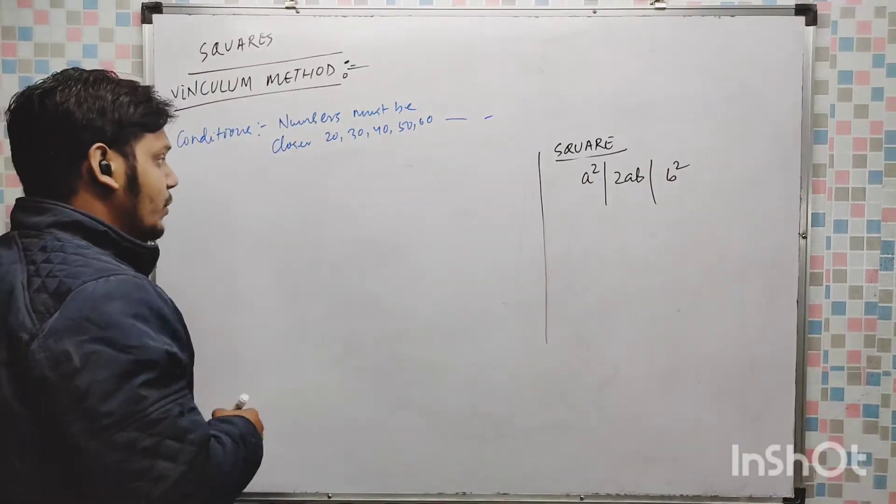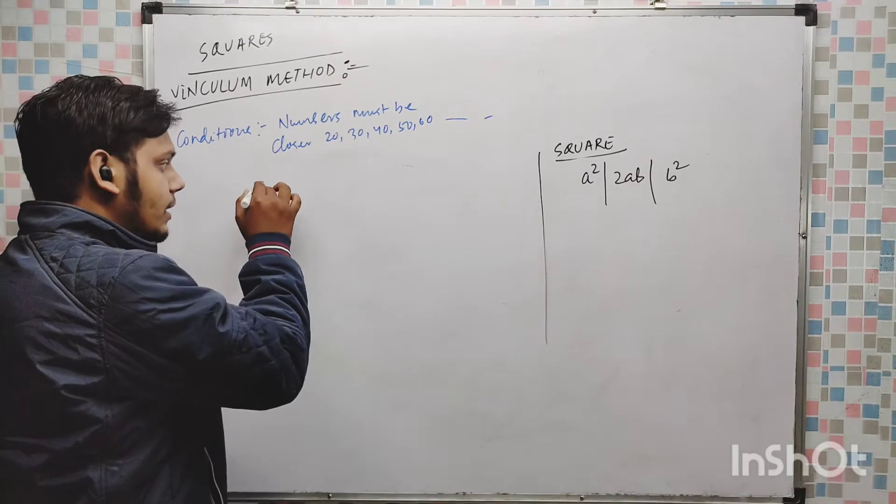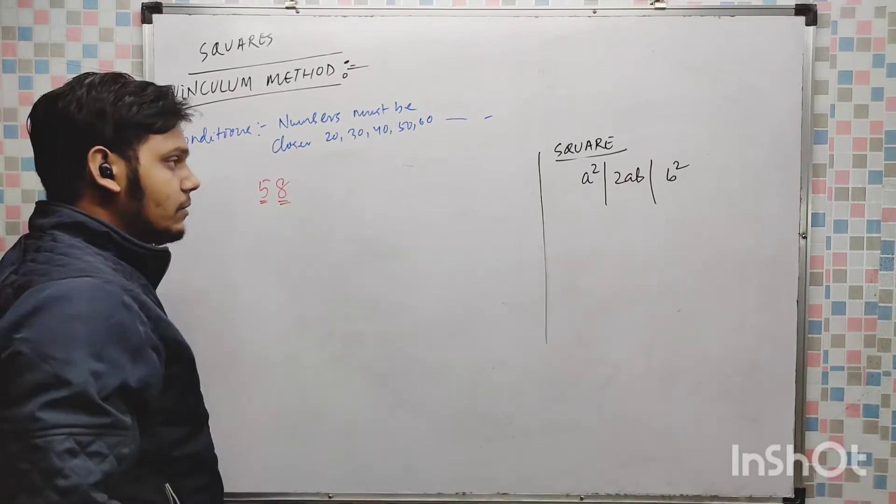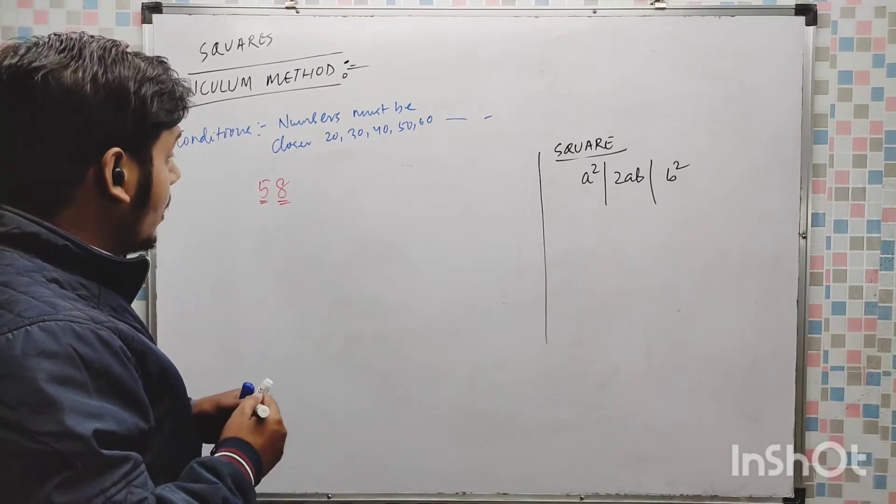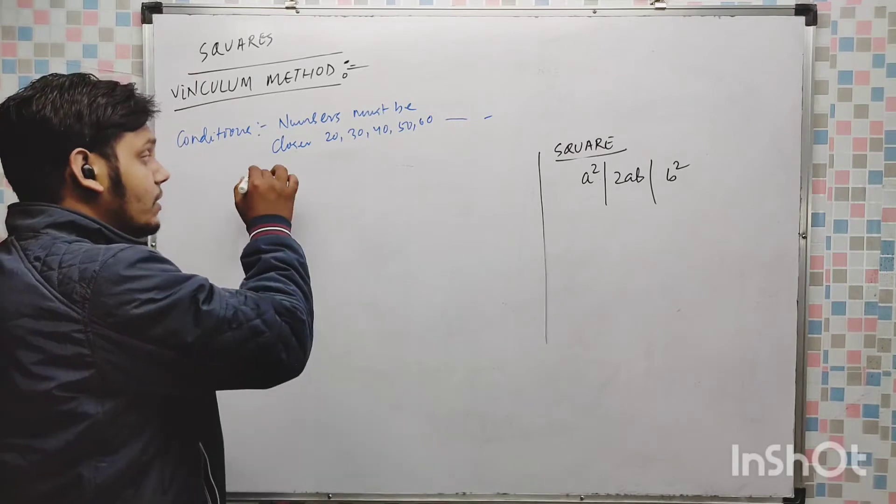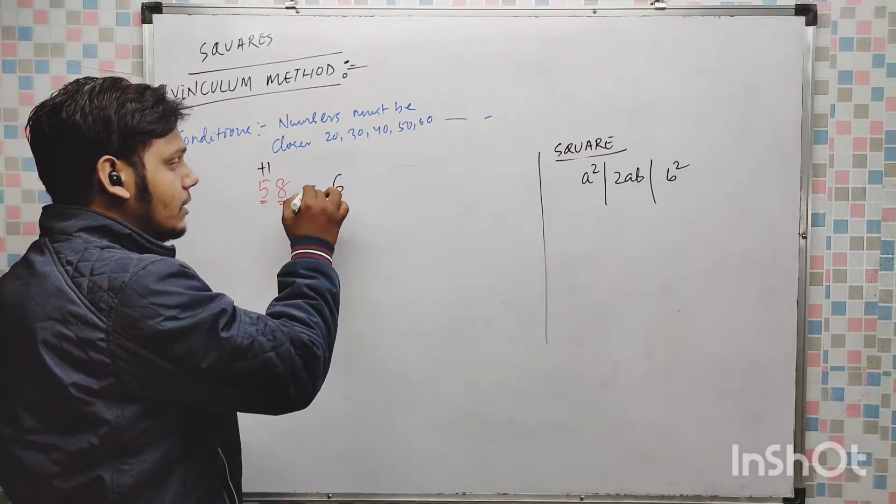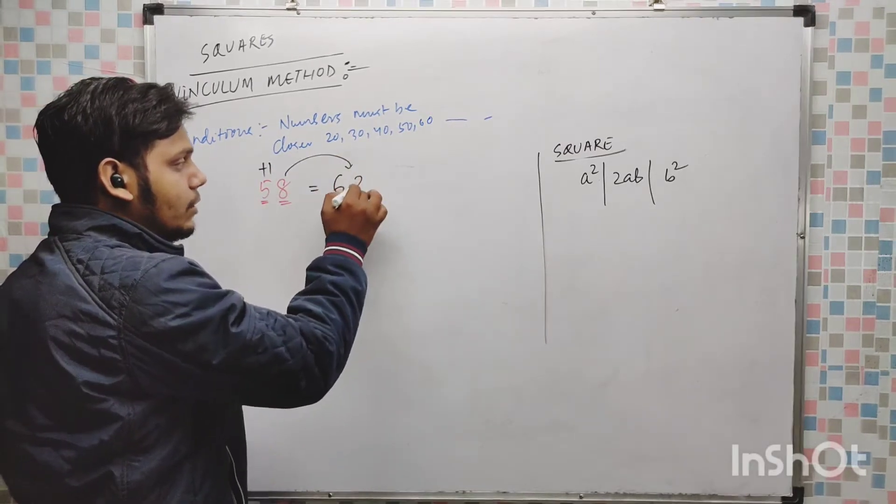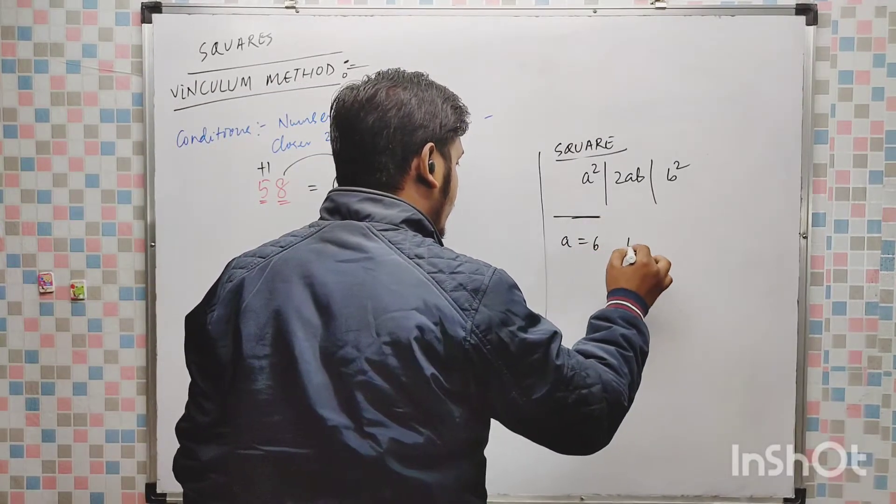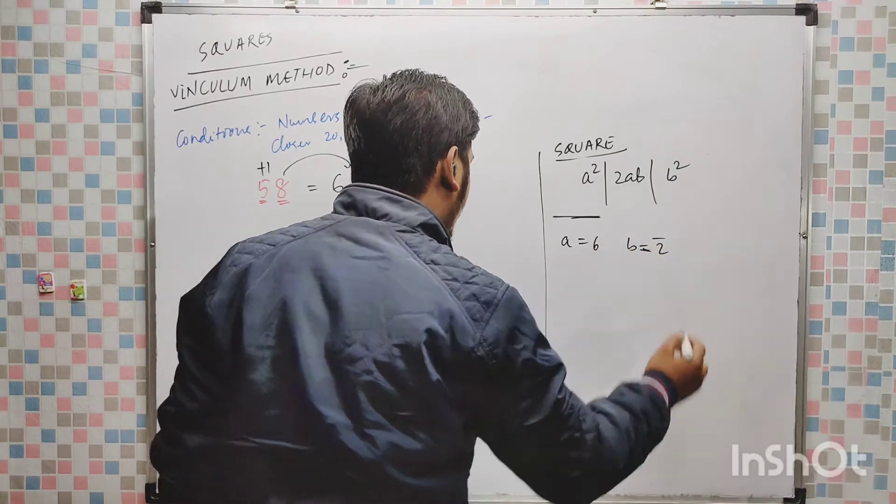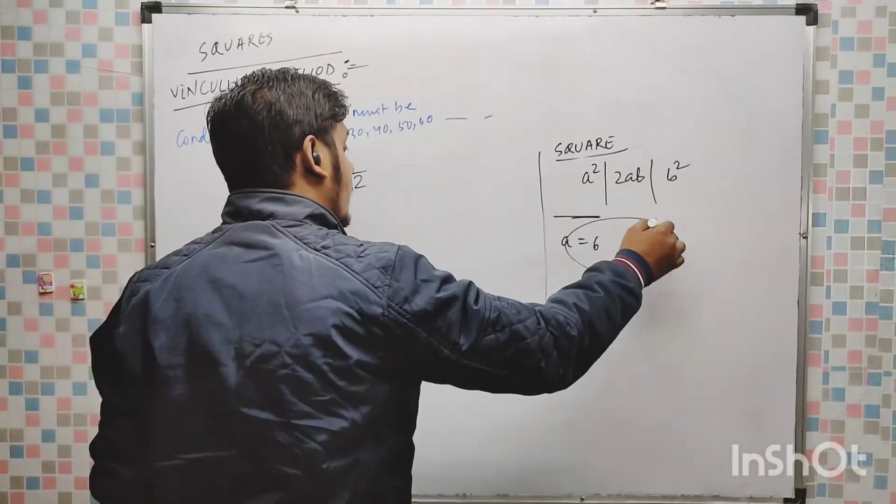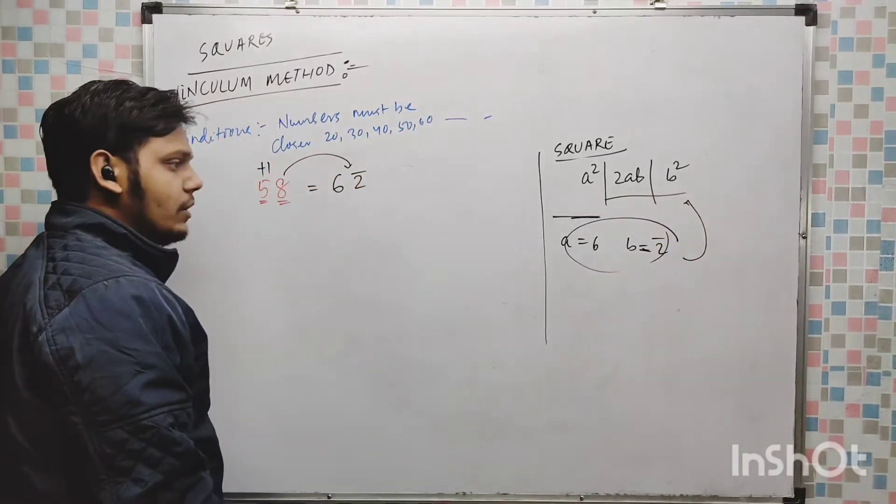Now suppose any number is given to you, let's say 58, so two bigger digits are heavy. Now how to do this, I have to find the vinculum of this number. 5 plus 1 is 6 and 8 complement 2 bar. Now what is a and b here? a is 6 and b is 2 bar, 2 bar is minus 2. Now I have to arrange this according to this formula, same formula only.